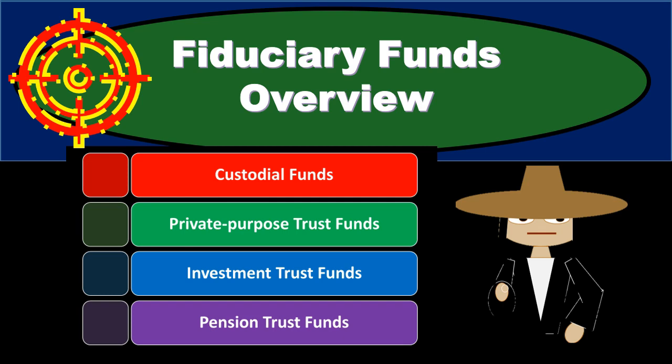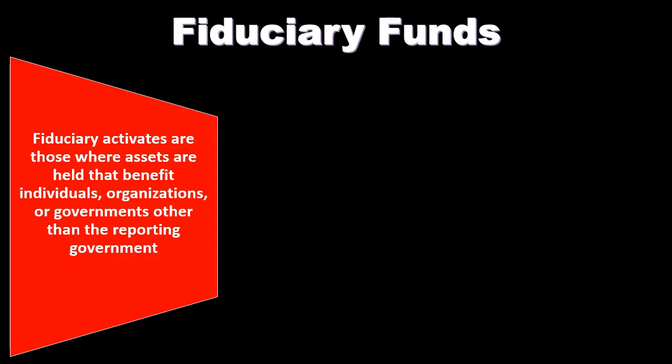The governmental type funds are the largest groups of funds, the ones we want to keep most familiar with — those using the modified accrual basis. Proprietary funds are those acting in a similar fashion to for-profit types of organizations, with internal service funds and enterprise type funds. Now the fiduciary funds act in such a way that there's some type of fiduciary responsibility. These are the funds which we will expand on here.